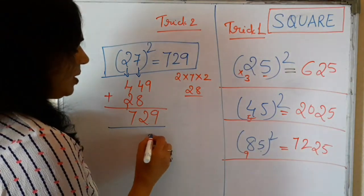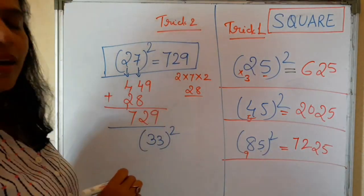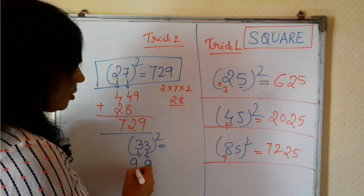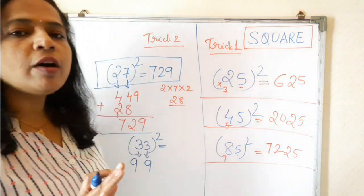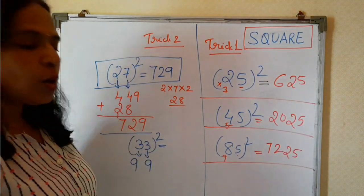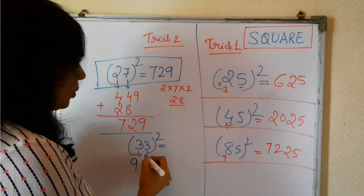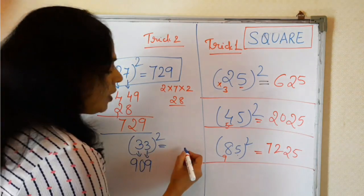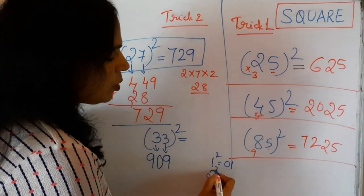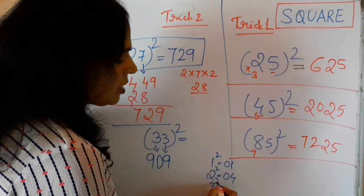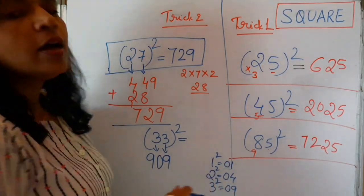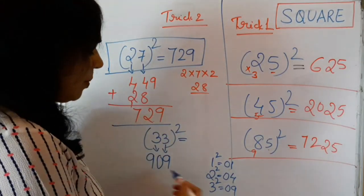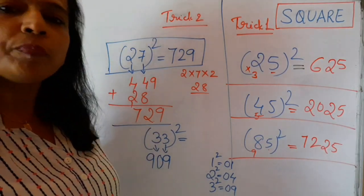Let us take one more example. 33 square. Now, write first. 3 square is 9 and this 3 square is also 9. Since we are writing square, always we have to write in 2 digits in the unit place. So, this 3 square is 9 is 1 digit. We have to make this into 2 digits. So, I am adding over here 0.